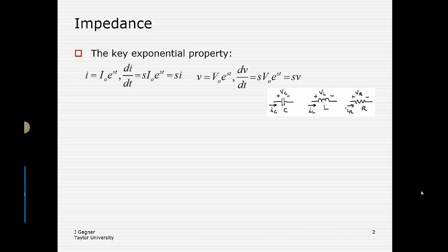When we consider how this impacts the IV relationship for capacitor, inductor, and resistor, we find that for the capacitor and inductor this has profound opportunities. Consider the capacitor whose current is C times dVc/dt. If we constrain ourselves to a voltage of the functional form e to the st, then when we take the derivative dV/dt, we arrive at s times that voltage again. So we get a proportional relationship between the capacitor's voltage and current. That constant of proportionality is s times C, or 1 over s times C. This is restricted to functions of the form e to the st.